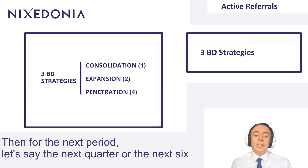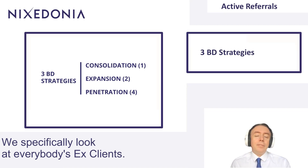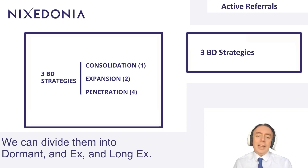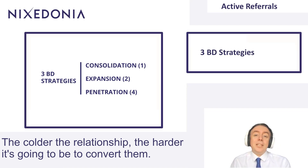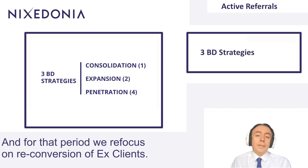Then for the next period — let's say the next quarter or the next six months — it's going to be a market expansion strategy. We specifically look at everybody's ex-clients. We can divide them into dormant, ex, and long ex, and measure this chronologically. The colder the relationship, the harder it's going to be to convert them, and for that period we refocus on reconversion of ex-clients.